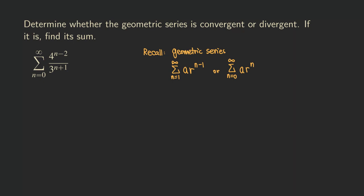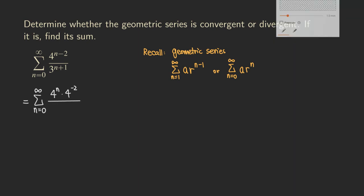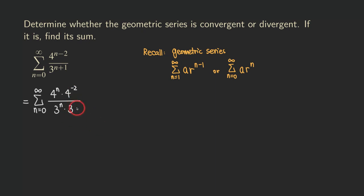So first, we are going to rewrite the series. So we have four to the n. And then we are going to break the exponent up for the numerator and then also same thing for the bottom. So it will become four to the n times four to the negative second. So now that's the numerator. And then our denominator would be three to the n times three to the first, just three. So far, so good.